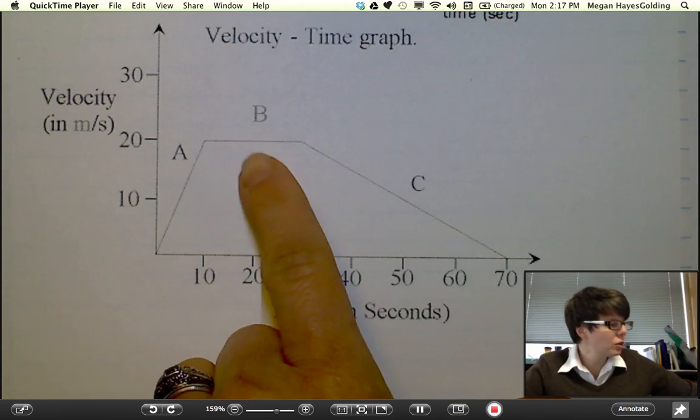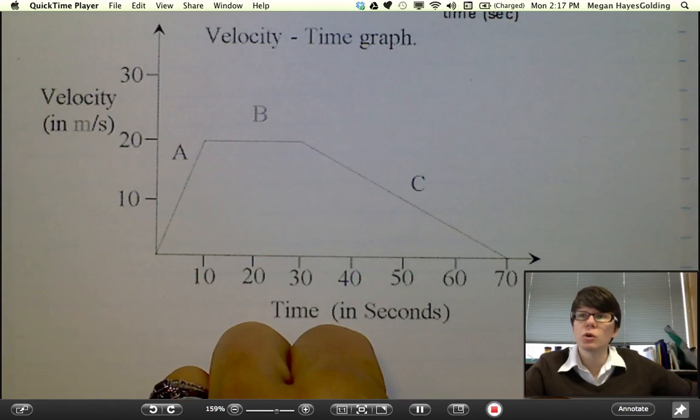So the correct answer here, B, constant velocity during this part of the graph.